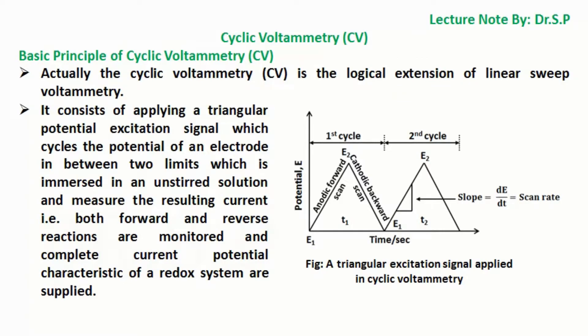Basic Principle of Cyclic Voltammetry CV. Actually, the cyclic voltammetry CV is the logical extension of linear sweep voltammetry. It consists of applying a triangular potential excitation signal which cycles the potential of an electrode between two limits.